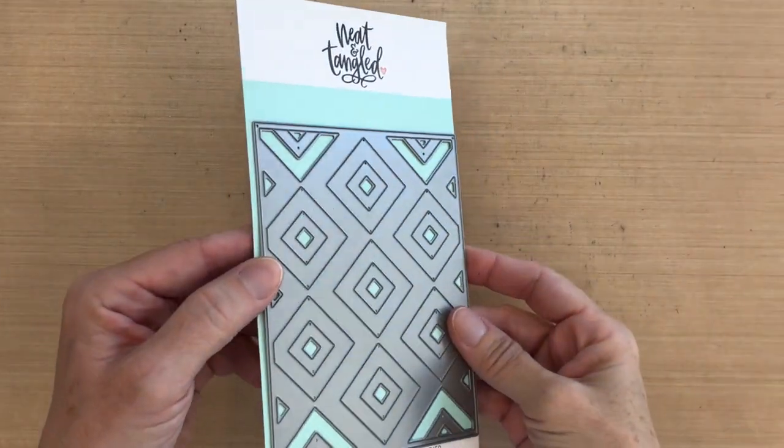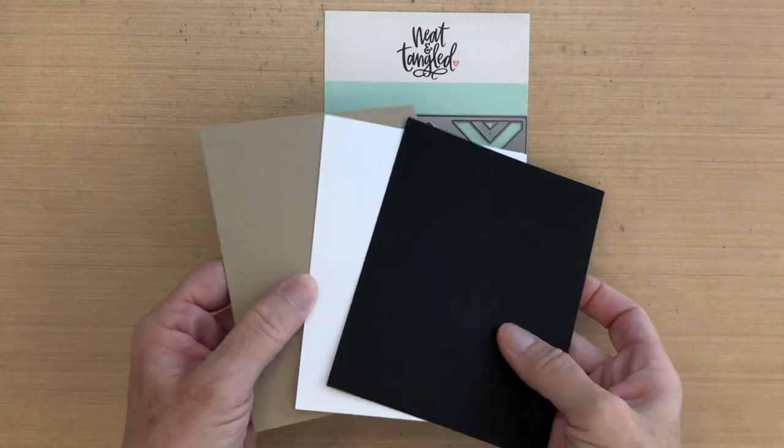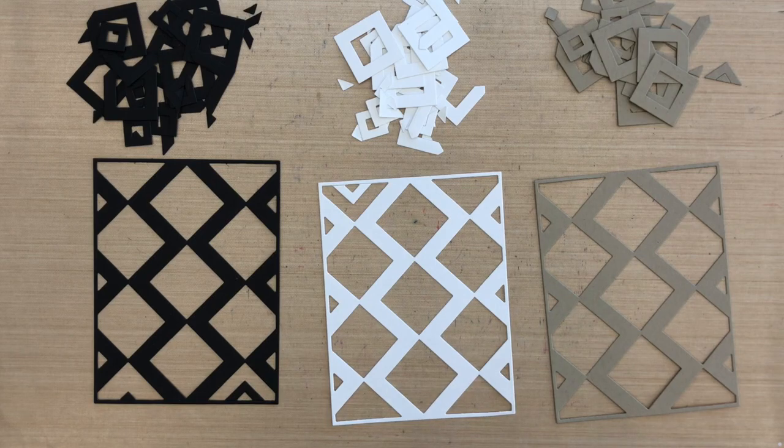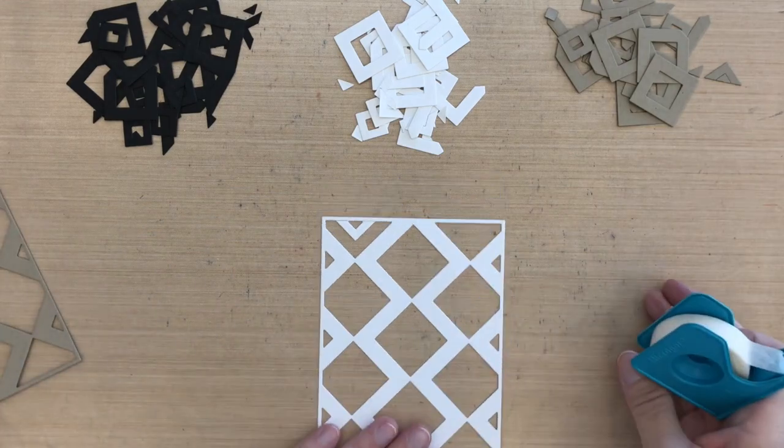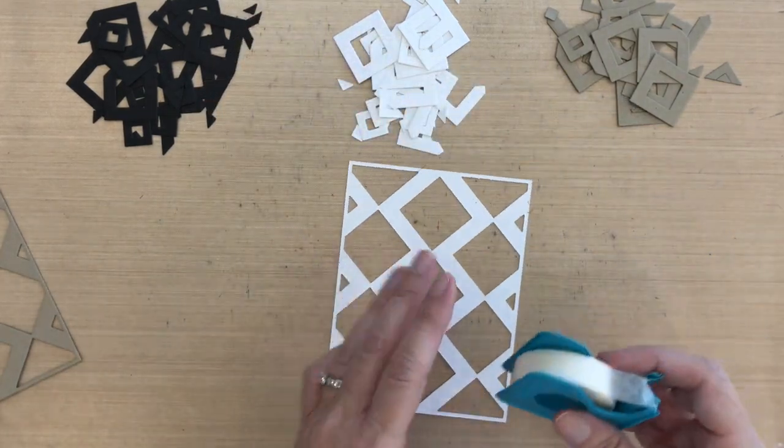All right, so I'm going to start with my product. It's the Neat and Tangled Inlaid Squares Cover Plate Die. And I'm going to cut this die out of three pieces of cardstock: black, white, and crumb cake by Stampin' Up. So you can see all my pieces and the outside frame that gets cut. I'm going to do these one at a time. The first thing I'm going to do is take my white one and flip it over.